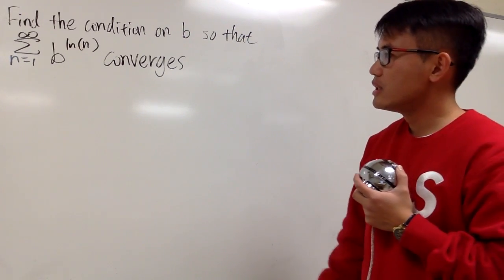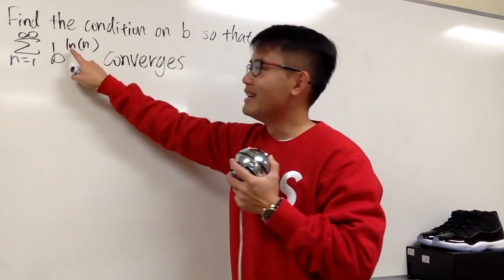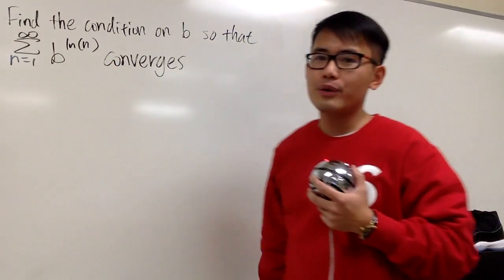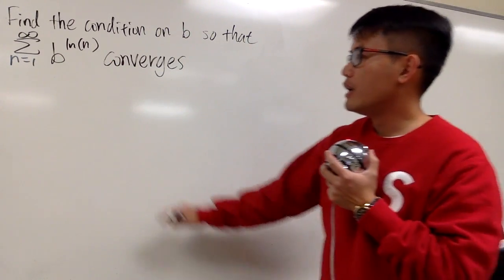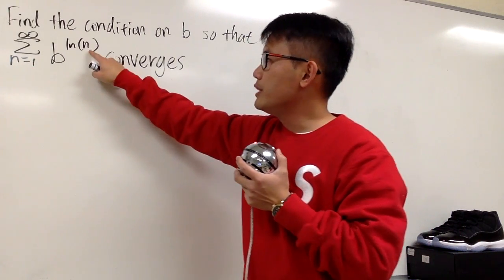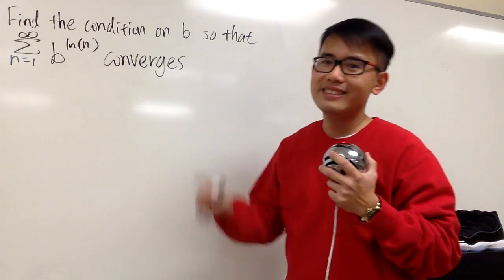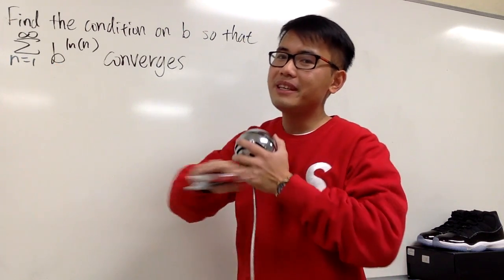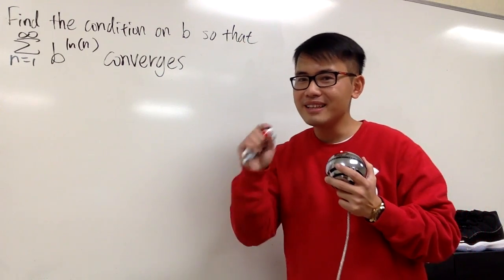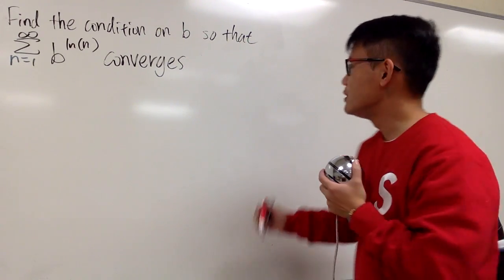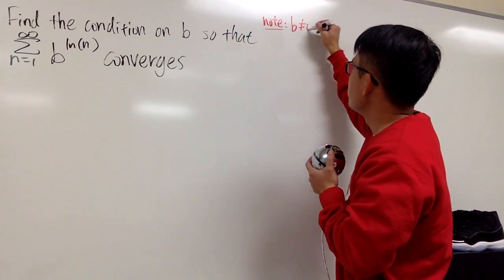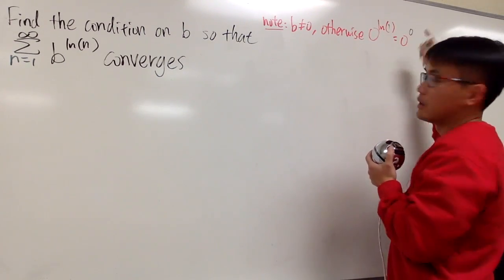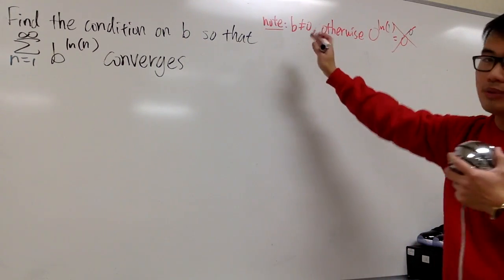So let's make some observations first. The trouble is the power — this is ln n, and we have to plug in n equal to 1, 2, 3, 4, 5, and so on. When n is equal to 1, we plug in 1 and we have ln 1, which is 0. When we have 0 for the power and b is the base, b cannot be 0, because 0 to the 0th power is undefined. So b cannot be 0 — that's the first condition.